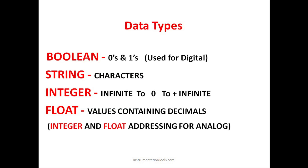Data types can be categorized into four types. Boolean means a zero or one state, used for digital signals. Strings are basically characters. Integer means a value existing from minus infinite to plus infinite — it can be any value between these. Float is a data type which contains values in decimal. These are the four data types which will be very important in PLC programming.